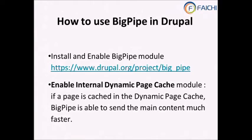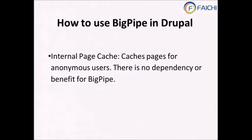BigPipe in Drupal depends on the internal dynamic page cache module, which is only available for Drupal 8. It allows Drupal to prioritize dynamic versus non-dynamic content automatically — you don't decide, Drupal does. There's a render caching API in Drupal 8 that analyzes the page and identifies what is most dynamic. BigPipe takes data from this. There's also internal page cache, but that's for anonymous users and isn't required for BigPipe.